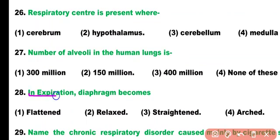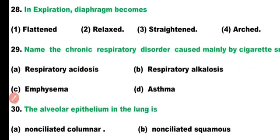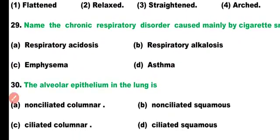Question number 28. During expiration, the diaphragm becomes: flattened, relaxed, straightened, or arched. Correct answer is option 2. During expiration, the diaphragm becomes relaxed and adopts the shape of a dome.